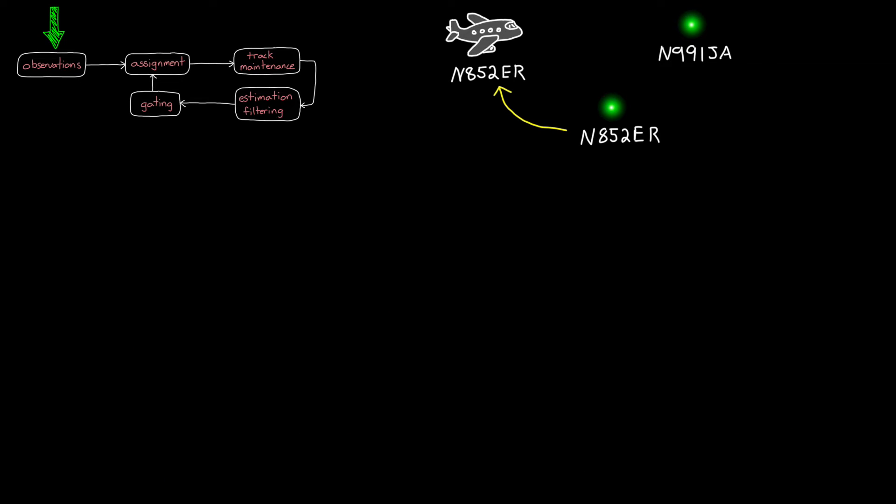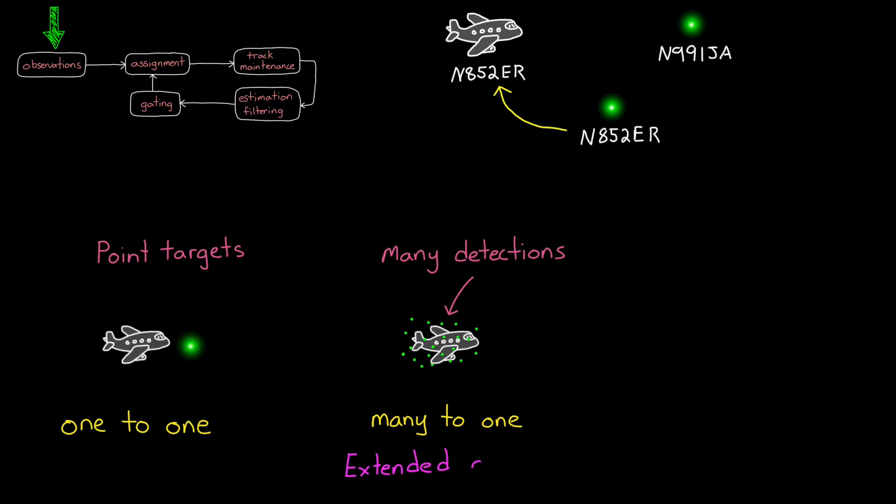Other things to consider with observations is that if the tracked object is a point target, then the observation would contain at most one detection. So we have to associate one detection with one object. But if the target object is large and the sensor has sufficient resolution, like with LiDAR for instance, there may be more than one detection per target. And we need to consider this when determining how we're going to handle associating this data.